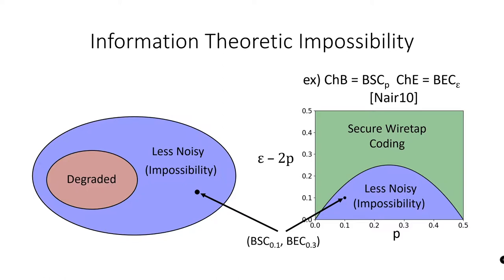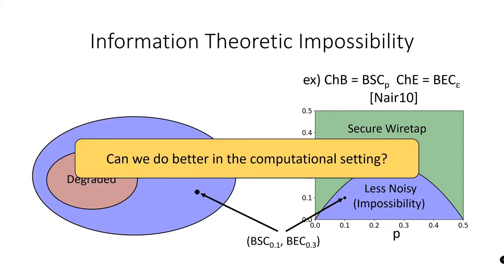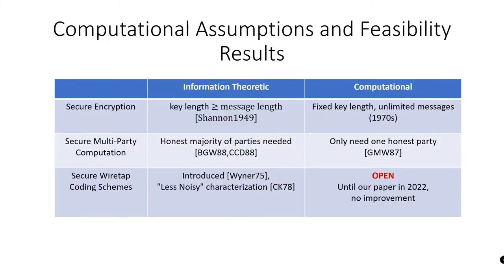Seeing as these channels have been very well characterized in the information-theoretic setting, we can ask a natural question: can we do better in the computational setting? Historically, computational assumptions have allowed us to get much better results in many areas of cryptography, including secure encryption and MPC, among many others. But despite the fact that wiretap channels have been studied for decades since 1975, to our knowledge, there has been no other work that studies feasibility results for these channels in the computational setting.